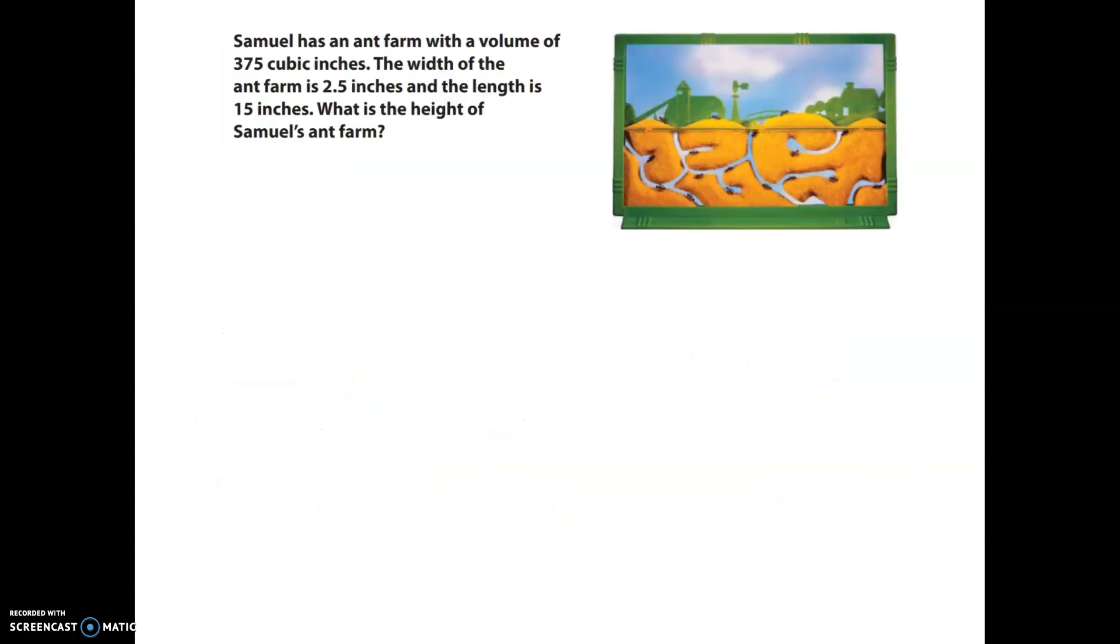This one says Samuel has an ant farm with a volume of 375 cubic inches. The width of the ant farm is 2.5 inches and the length is 15 inches. What is the height of Samuel's ant farm? All right, same thing here. Let's write down our equation. Volume equals length times width times height. And then let's fill in all the information that we know. Starting with volume, we do know the volume. It tells us it is 375 cubic inches.